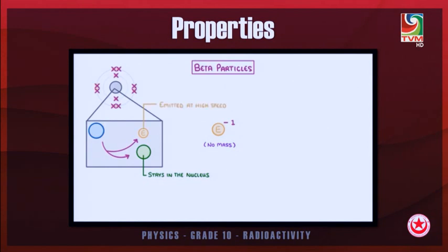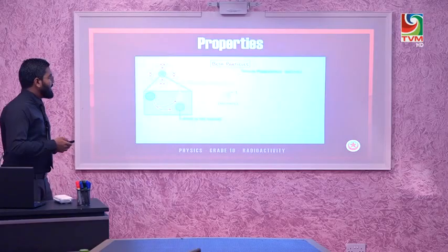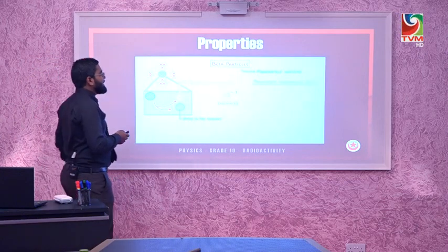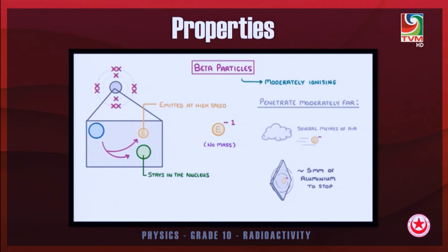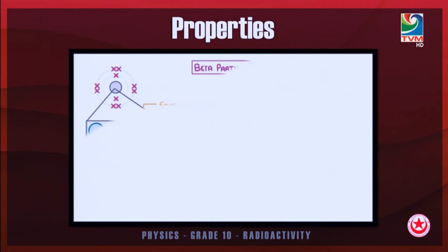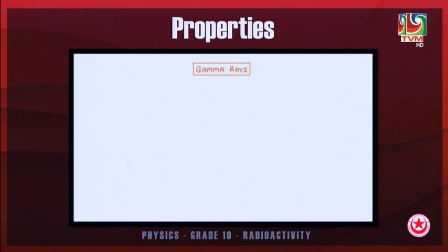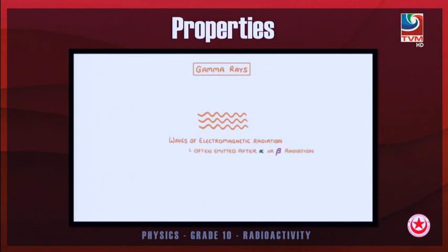Beta particles have a moderately ionizing power. Their penetrating power reaches a few meters in air. Being very small compared to alpha, they can travel further and can be stopped by a five-millimeter aluminum sheet. Gamma rays, on the other hand, are pure energy — a wave of electromagnetic radiation emitted after an alpha or beta emission.